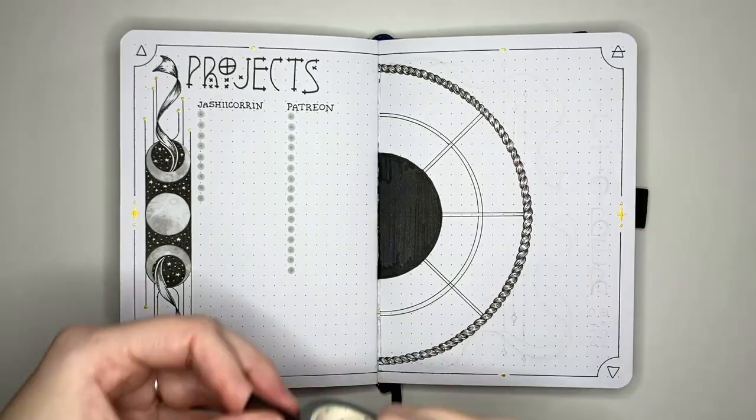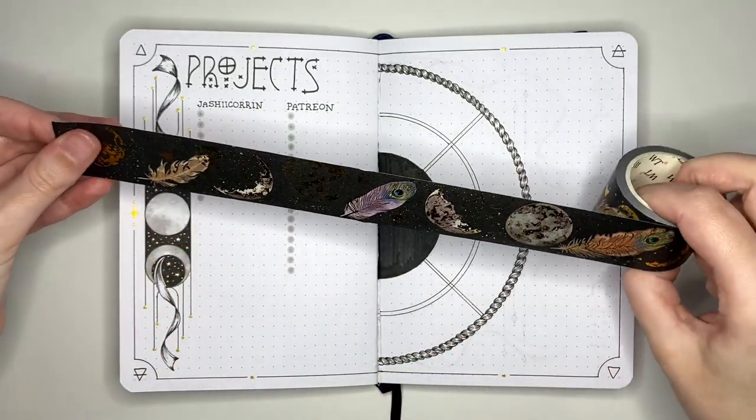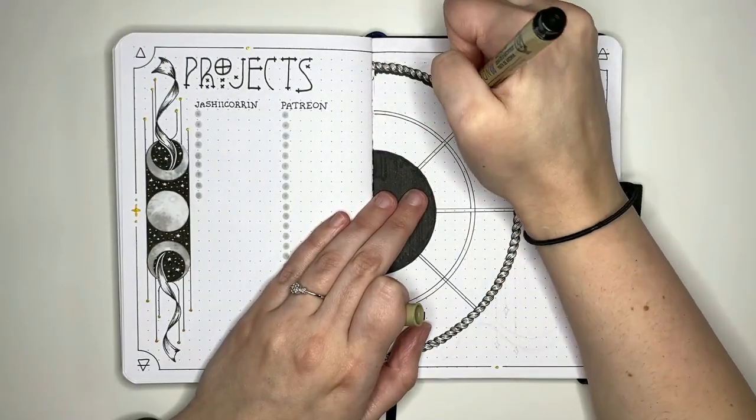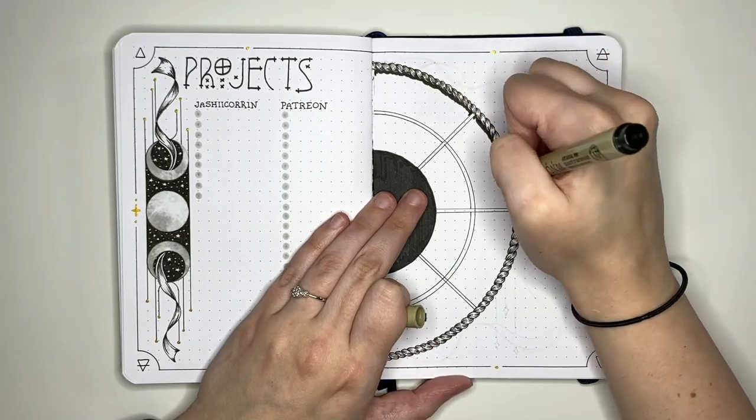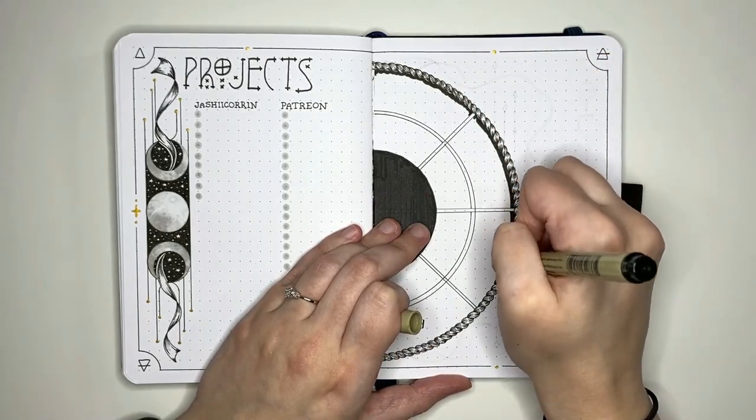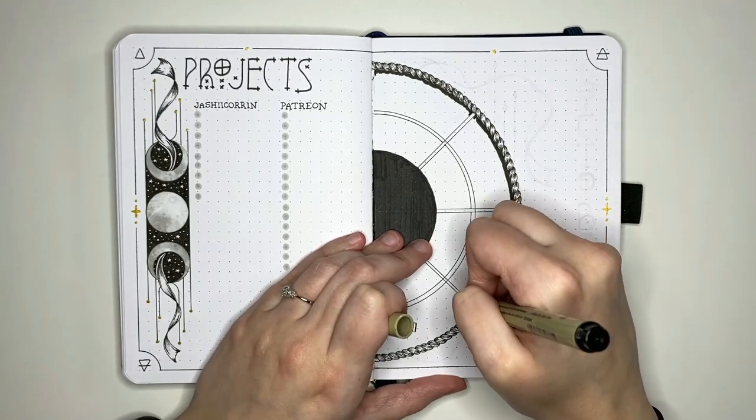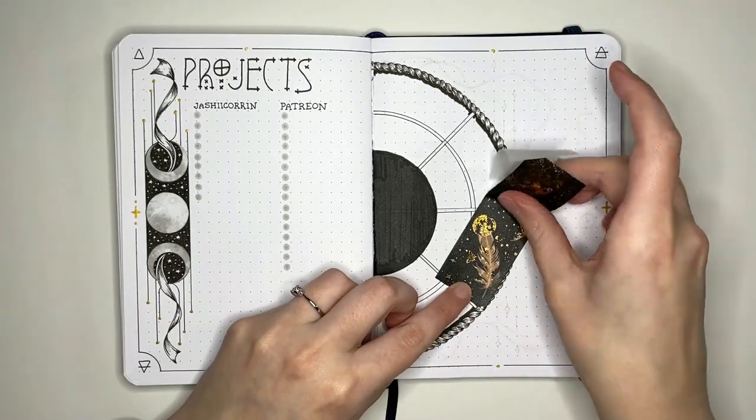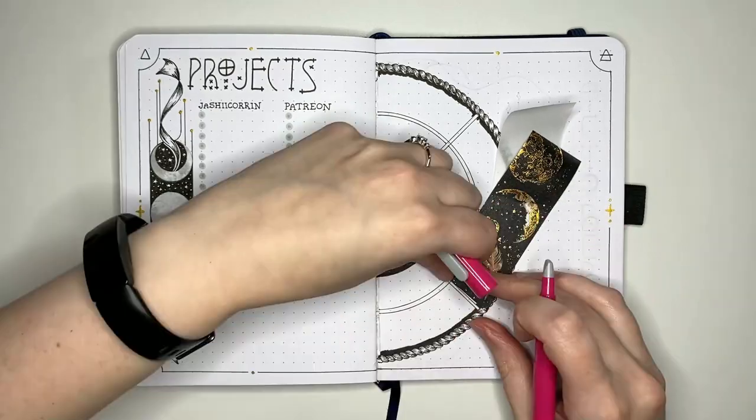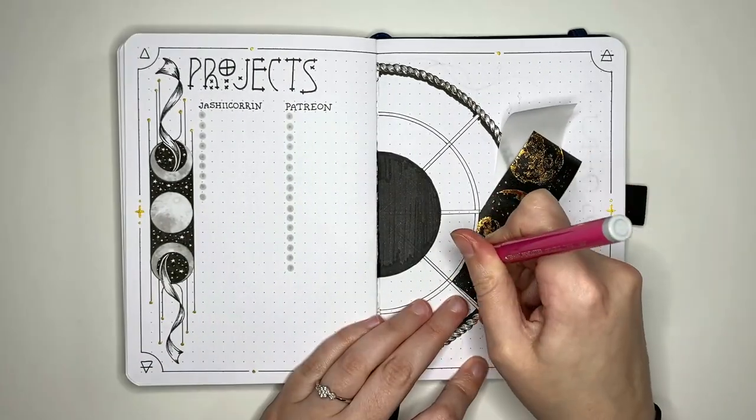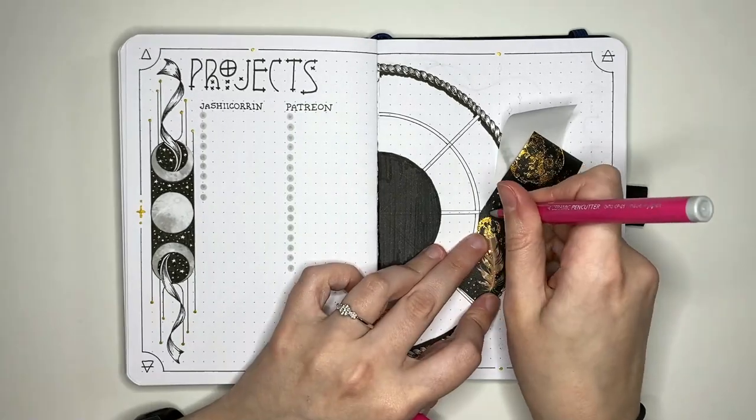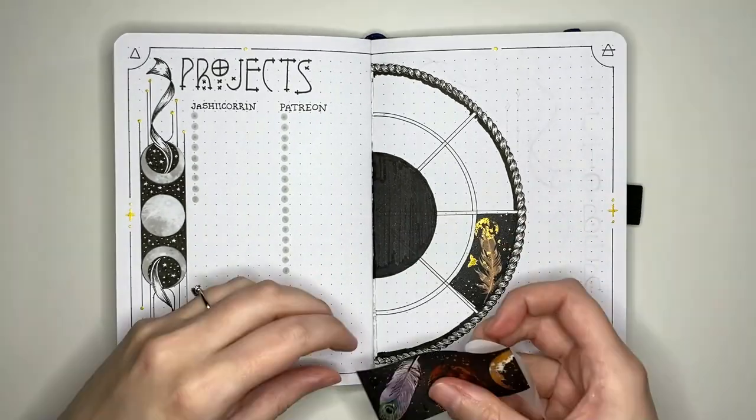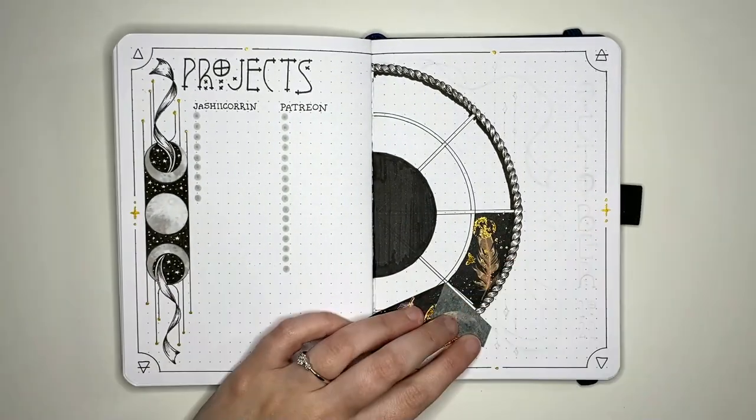Instead I decided to use washi tape. I have this super gorgeous washi tape set from the washi tape shop and I haven't gotten around to using it yet so I thought it would be fun to use in my October setup because it ties into the colour palette that I'm building. So mainly black and gold. Before putting that washi tape down you can see I'm just going and preparing my border by colouring in a little bit more with some black. This is so the washi tape doesn't have to butt up exactly against the rope border. I can cut it a little bit further out from that just to save myself some time and honestly time saving was something I kind of needed in this because I thought that using the washi tape would make it take less long than drawing things out but I'm kind of wondering if it wouldn't have just been quicker to draw stuff.